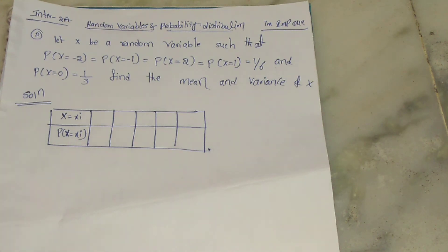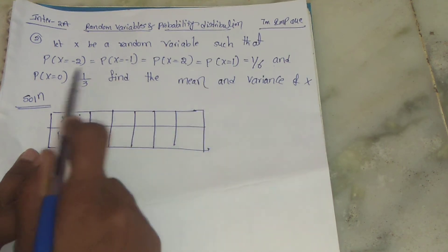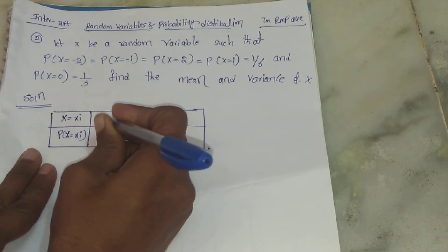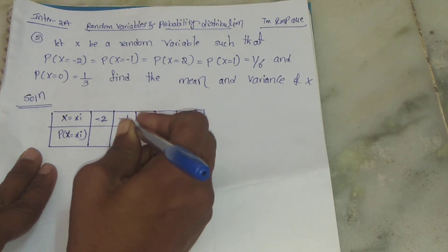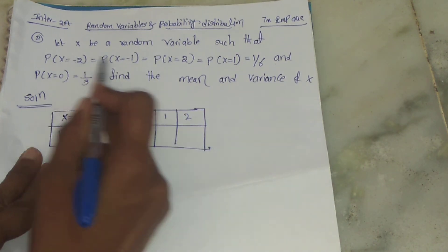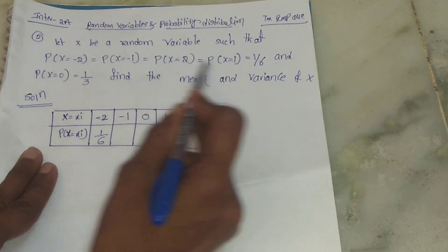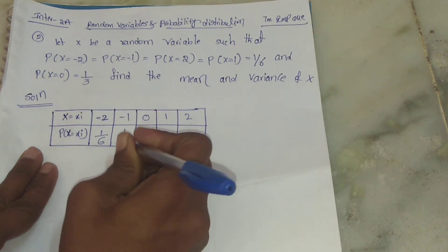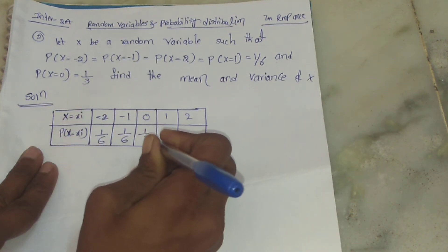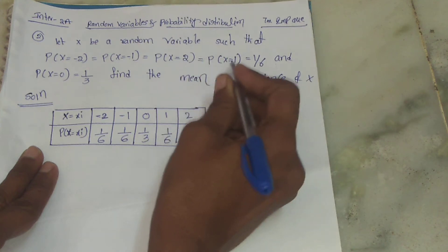We'll set up a table with this data. The X values are: -2, -1, 0, 1, 2. When X = -2, probability is 1/6. When X = -1, probability is 1/6. When X = 0, probability is 1/3. When X = 1, probability is 1/6. When X = 2, probability is 1/6.